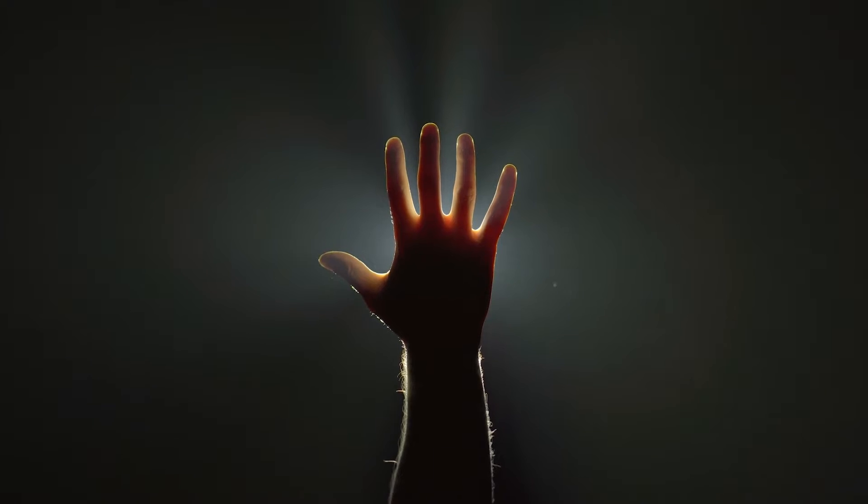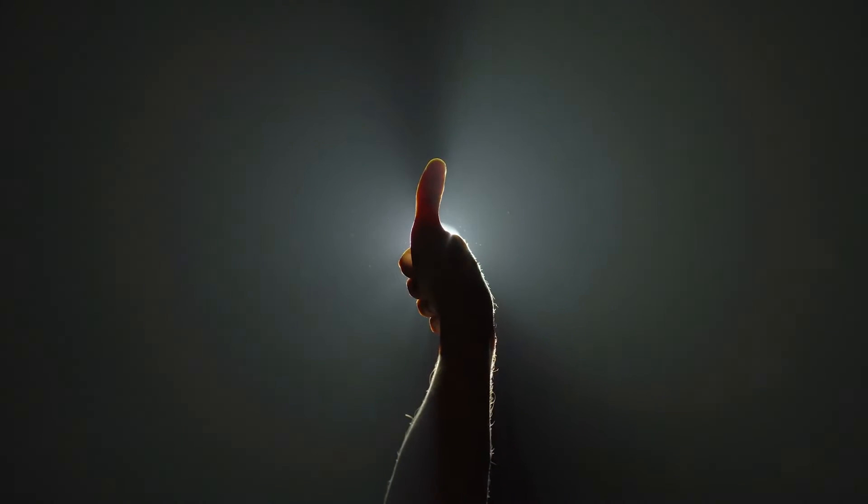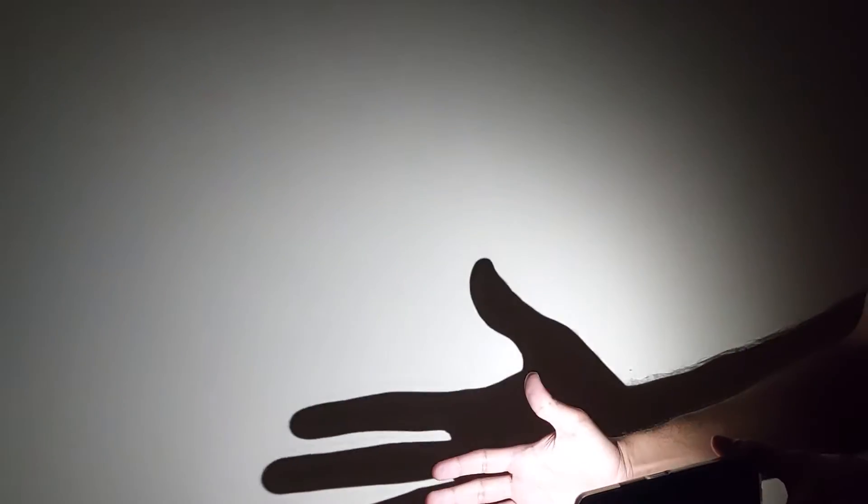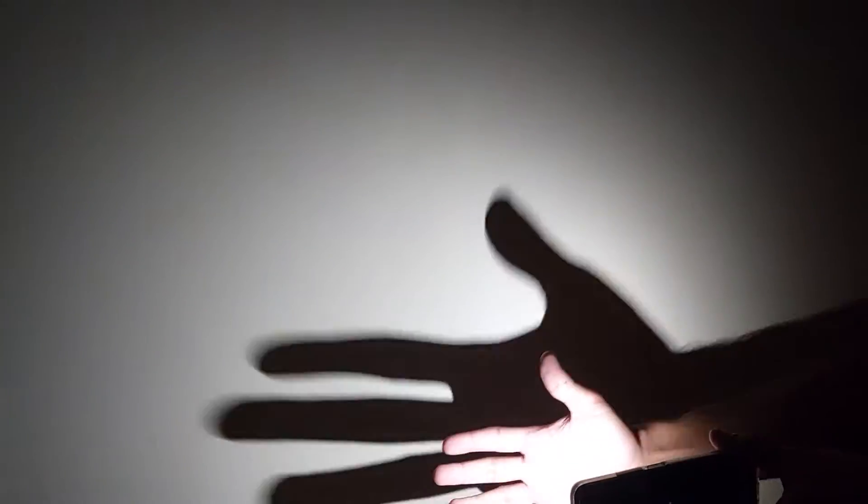I play this game with my kid all the time. So I put my hand in front of a light source and then a shadow is going to appear on the wall that's much larger than my actual hand. And then when I move my hand, my hand's shadow is going to move faster than my actual hand.